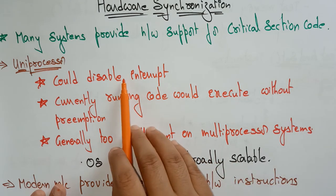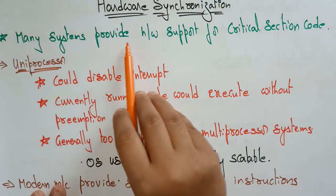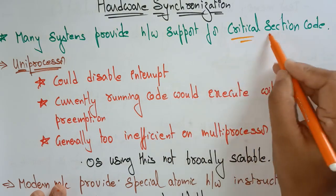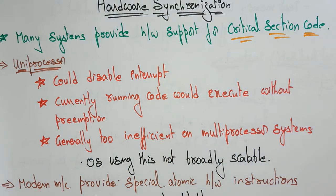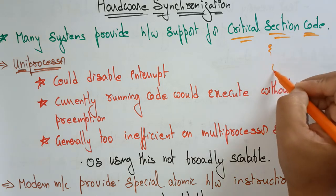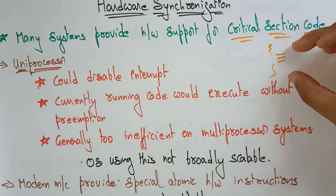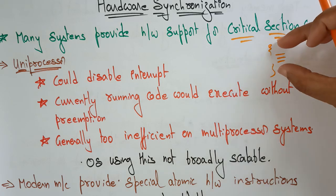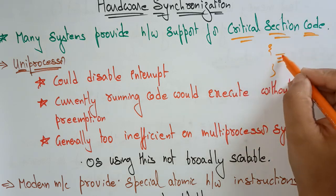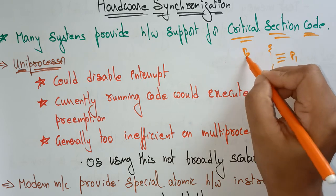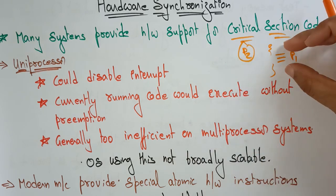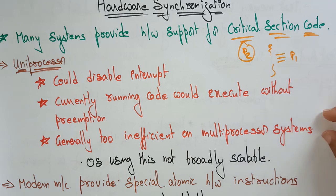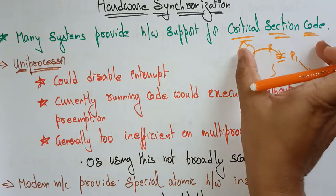Many systems provide hardware support for critical section code. The critical section code means whenever one process is executing in the critical section, no other process will enter into that stage. Suppose P1 is executing — P2 has to wait until P1 is completed. Whenever P1 is completed, it comes out and P2 will enter into the critical section code.